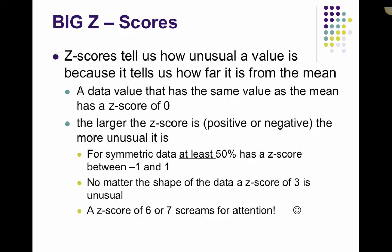No matter what the shape of the data, a z-score of 3 is going to be unusual. A z-score of 6 or 7 screams for attention and is most likely a mistake somewhere. That typically doesn't happen.